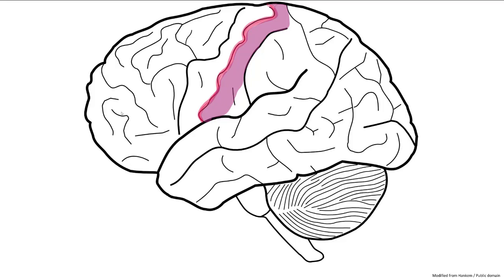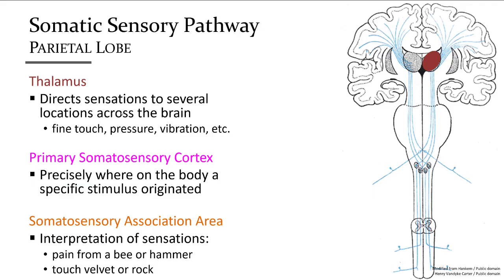Once sensations of touch, pressure, pain, temperature, and body position arrive at the primary somatosensory cortex, they are processed in the somatosensory association area along the posterior superior border. This region uses life experiences and memories to evaluate what you're touching and establish meaning. For example, you could discern between a nickel and a button just by touching it — the feeling is sent to the primary somatosensory cortex, but knowing the difference is the result of processing by the somatosensory association area.